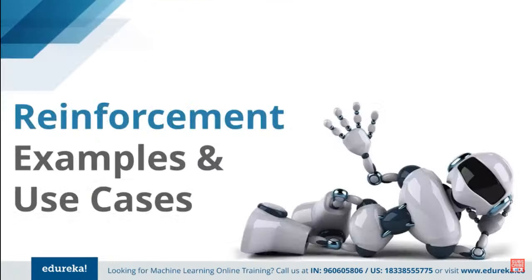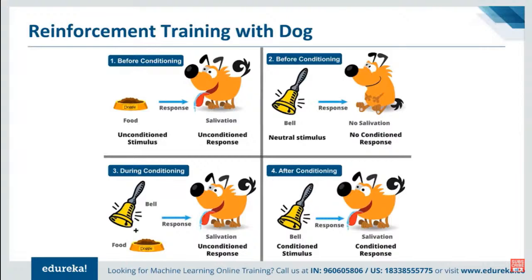Let's see some use cases, but before that, let's see how Pavlov trained his dog using reinforcement learning. Pavlov integrated learning in four stages: first, he gave meat to his dog and the dog salivated; next, he created a sound with a bell and the dog did not respond; then he conditioned the dog by ringing the bell and then giving food, causing the dog to salivate upon seeing the food; eventually, the dog started salivating just after hearing the bell even without food, as the dog was reinforced that the bell signals food.